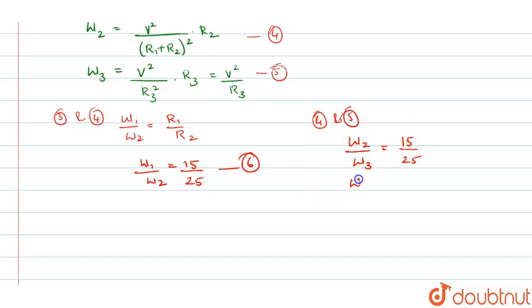And also, W2 by W3 will be equal to R2, R3 divided by R1 plus R2 whole square. We are dividing these two, 4 and 5. On substituting all these values, R1, R2, R3 from equation 1 and 2 and solving, finally,